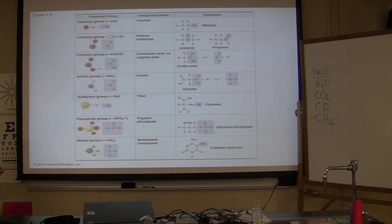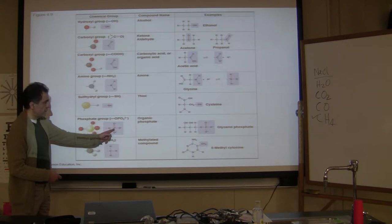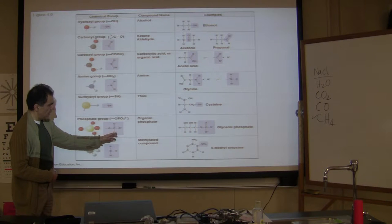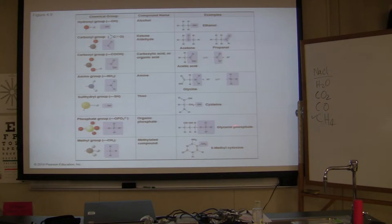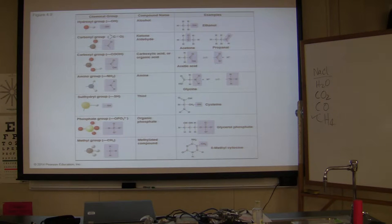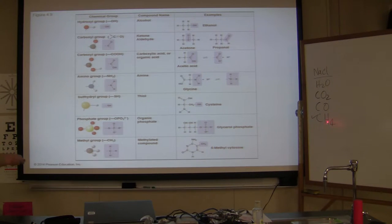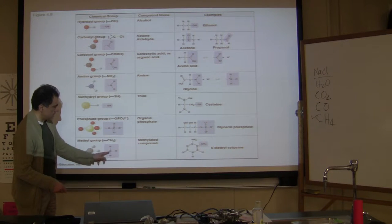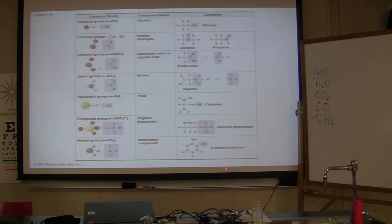Phosphate group — you'll see this a lot throughout the rest of the semester. Phosphorus with oxygen, three or four oxygens attached. Example: ATP and glycerol phosphate. Methyl group is one carbon with three hydrogens around it — the same as methane. There are many examples throughout the rest of the semester.